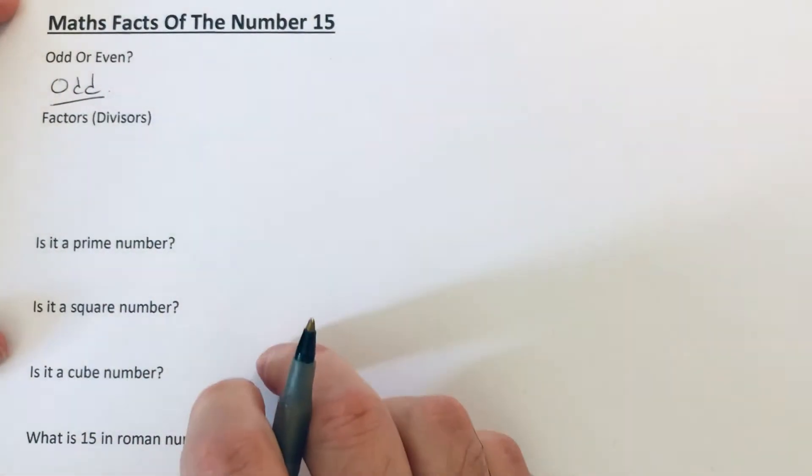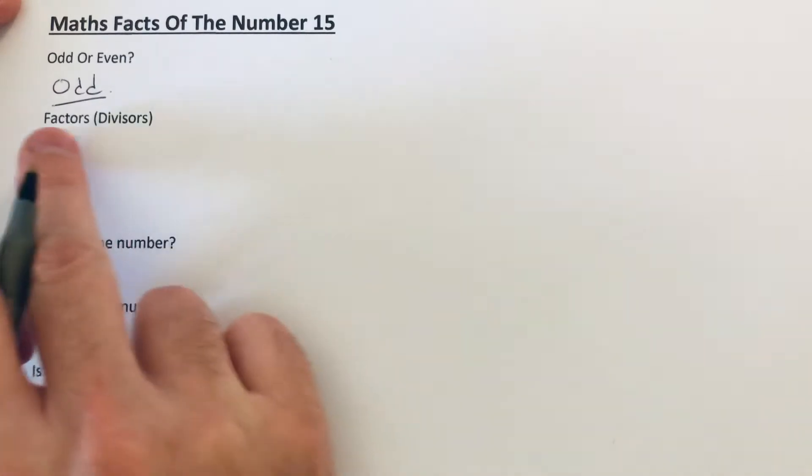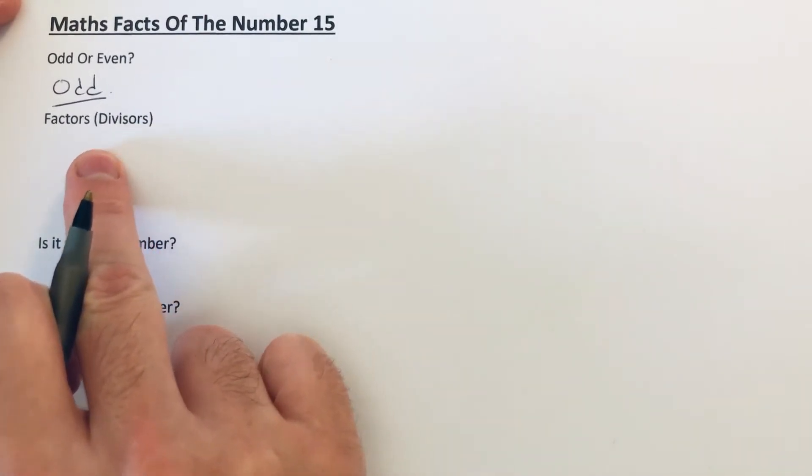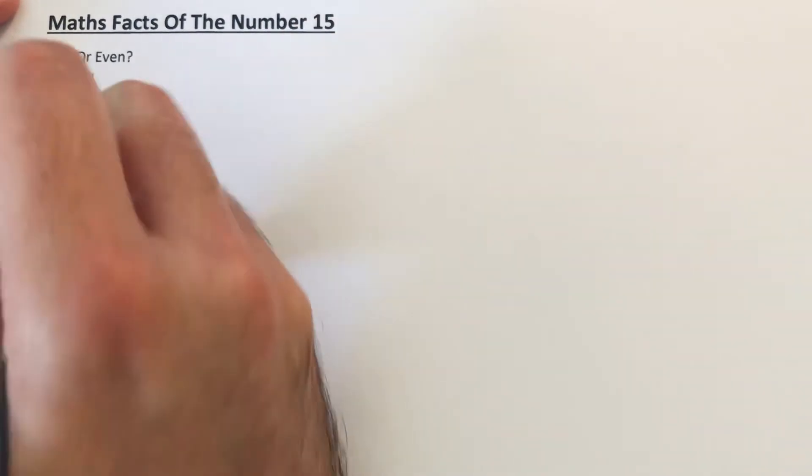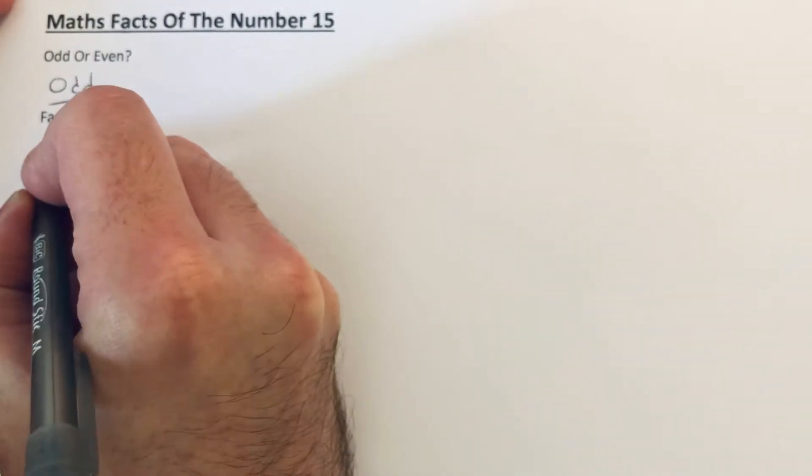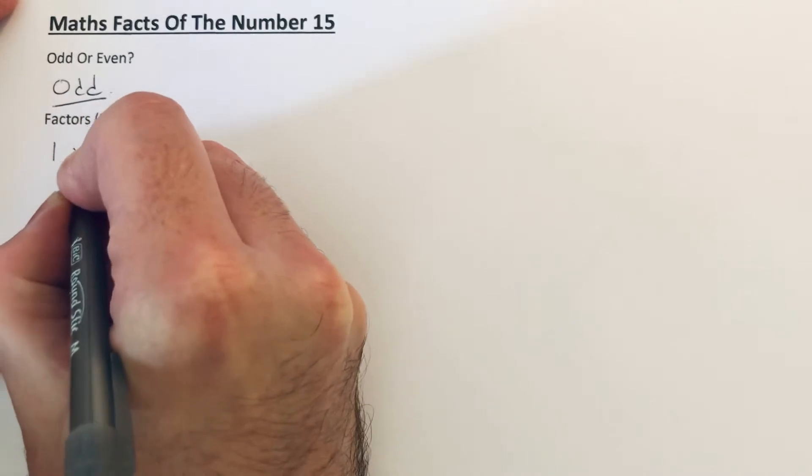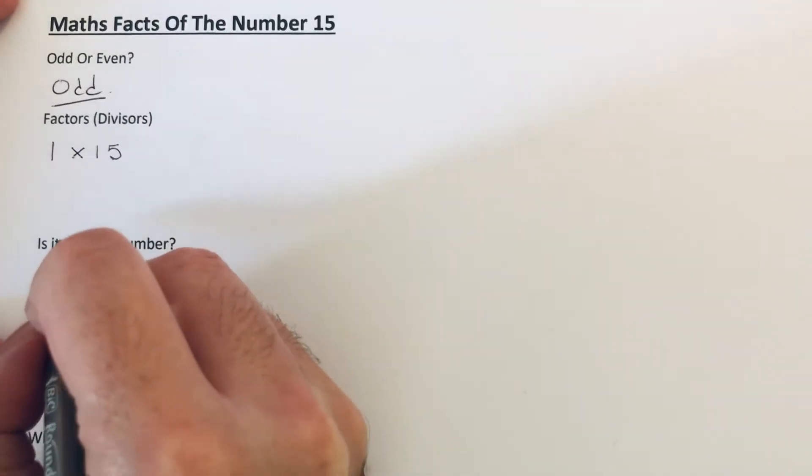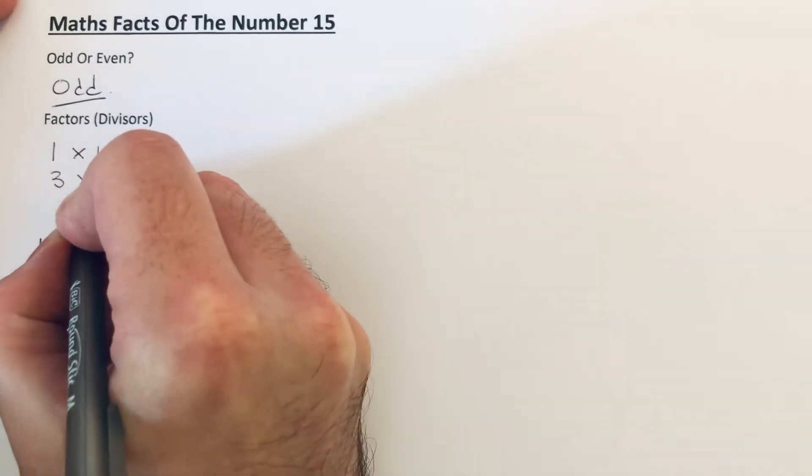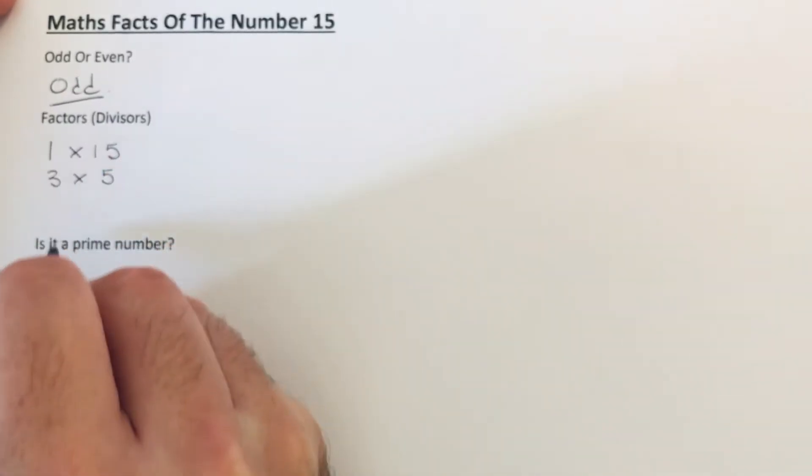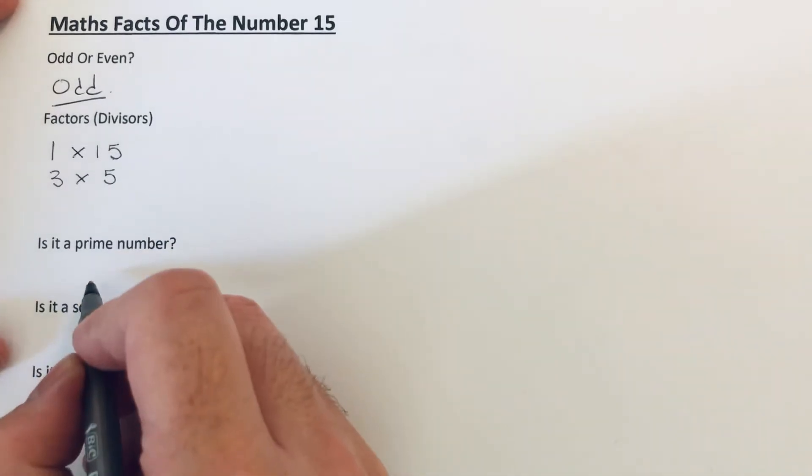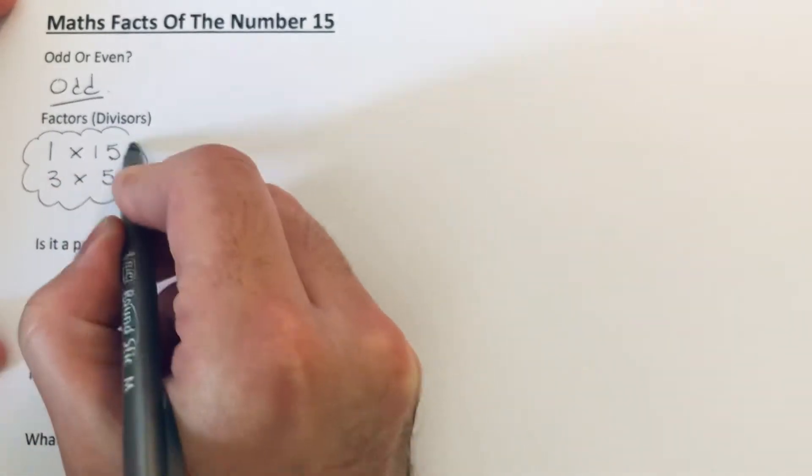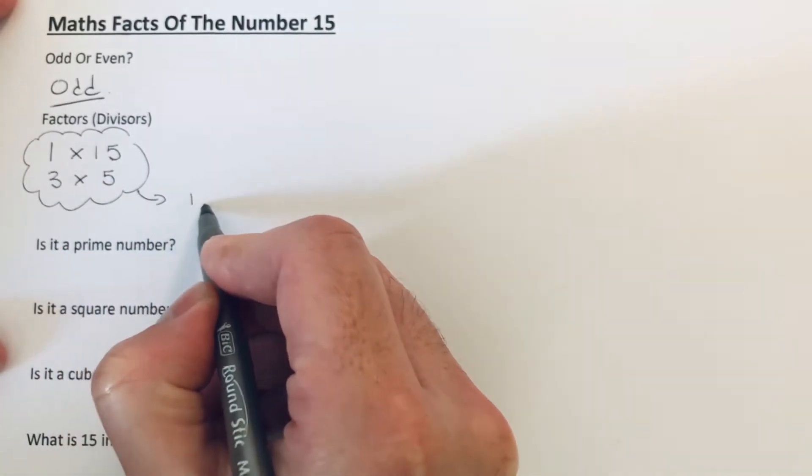Next, what are the factors of 15? Factors are numbers which go into the number. Let's start with the 1 times table: 1 goes into 15 fifteen times. 2 doesn't go into 15. Next is 3: 3 goes into 15 five times. 4 doesn't go into 15, and then we're back to 5. So our factors of 15 are 1, 3, 5, and 15.